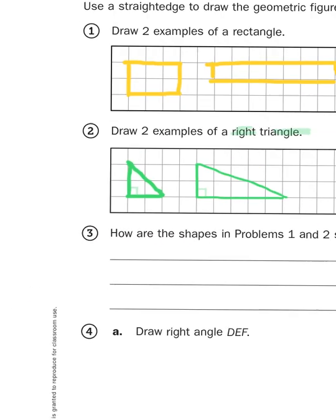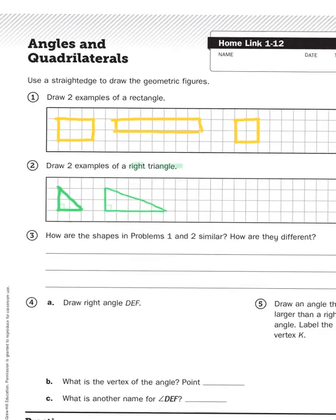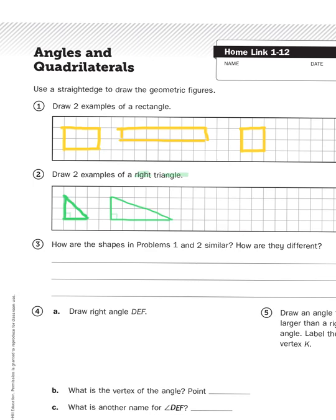So when we take a look at question number three, how are the shapes in problems one and two similar? How are they different? We're just comparing and contrasting. We can use some descriptors like, they are both polygons made up of closed shapes with line segments as sides. They have at least one right angle to them each. Some of their differences, of course, are some shapes have three sides. Some shapes have four. So there's a number of ways that you can compare and contrast these geometric shapes.